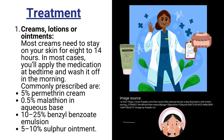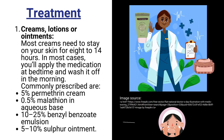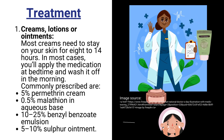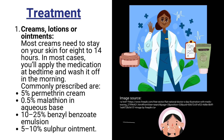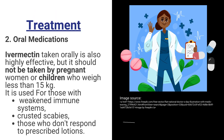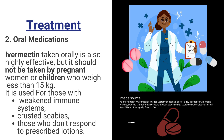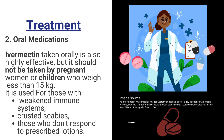For treatment, topical medications like creams, lotions, or ointments need to stay on your skin for 8 to 14 hours. In most cases you'll apply the medication at bedtime and wash it off in the morning. Commonly prescribed treatments are 5% permethrin cream, 0.5% malathion in aqueous base, 10 to 25% benzyl benzoate emulsion, and 5 to 10% sulfur ointment. Oral ivermectin taken orally is also highly effective.